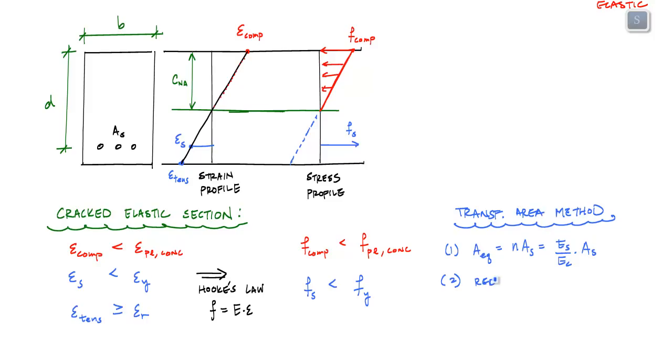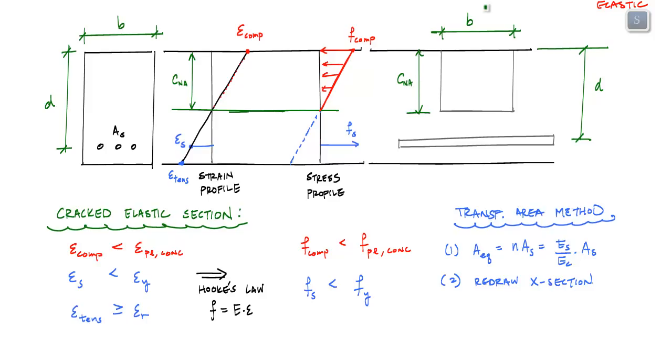Now we want to redraw the cross-section as one material. The uncracked concrete at the top remains concrete. Where we have the steel, I'm going to replace that steel with concrete. Since the modulus of elasticity of steel is almost 10 times greater than concrete in some cases, this area of steel becomes a giant equivalent area of concrete. This area is centered around where the steel is, such that the depth to steel d and neutral axis depth remain the same. The transformed area method is just having this funky-shaped cross-section and analyzing it like in mechanics of materials.